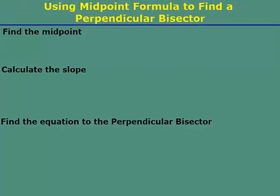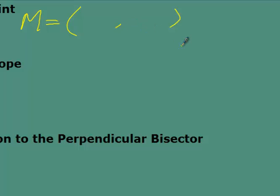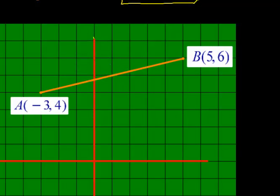First thing: find the midpoint. Big M equals: negative 3 plus 5 all over 2, and 4 plus 6 all over 2. Negative 3 plus 5 is 2, divided by 2 is 1. 4 plus 6 is 10, divided by 2 is 5. So my midpoint is (1, 5). My perpendicular bisector has to pass through this point, cutting line AB into two equal pieces.